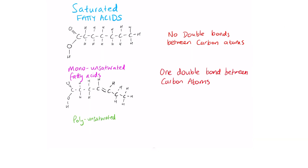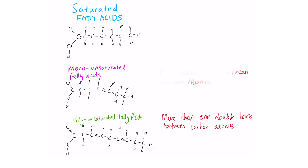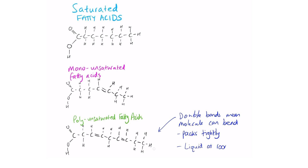The third type is called polyunsaturated fatty acids and they contain more than one double bond between the carbon atoms, as you can see in the chemical structure here. The double bonds in polyunsaturated fatty acids cause the molecule to bend, so they can pack and wind together quite closely, making them a liquid state at room temperature.